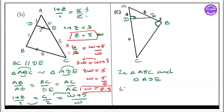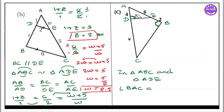Down A is a triangle. C, A, B. Angle B, A, C. B, A, C equal to angle B, A, C. Triangle ADE. Angle D, A, E. Down A, D, A, E.